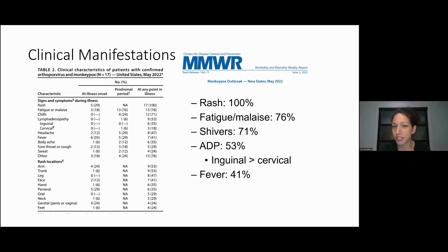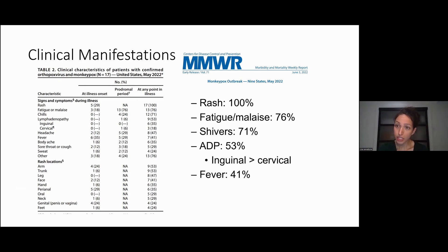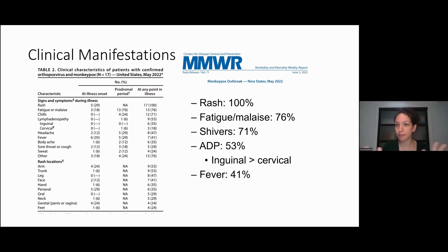The US is seeing similar patterns — rash in 100% of diagnosed cases, since that's how they're identified. There may be subclinical cases, as there are in endemic regions. In the States, they seem to have more systemic symptoms — fatigue around 76%, shivers 71%. Lymph nodes about half, inguinal more than cervical, probably reflecting lesion location. Fever 41%, similar to here. All in all, I'd say about half — maybe a little more than half — have systemic symptoms.